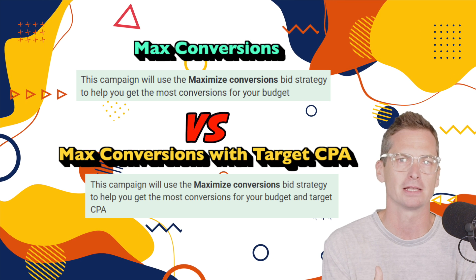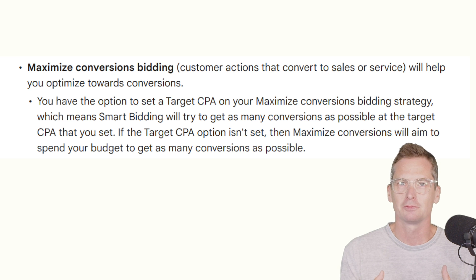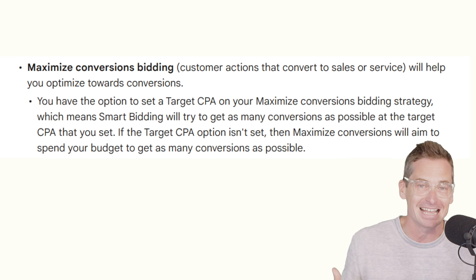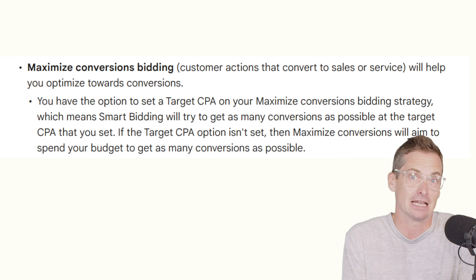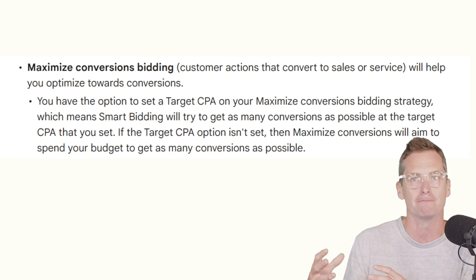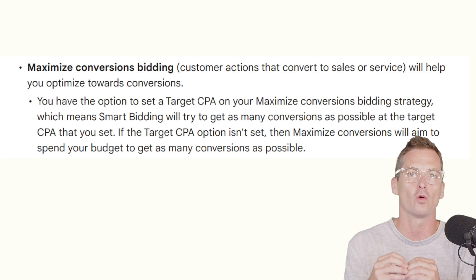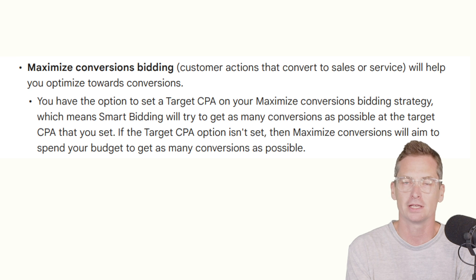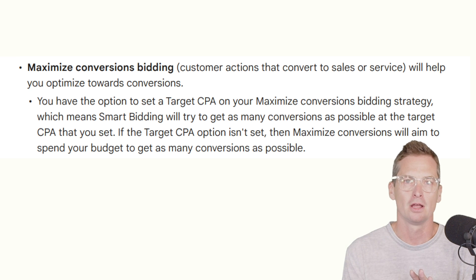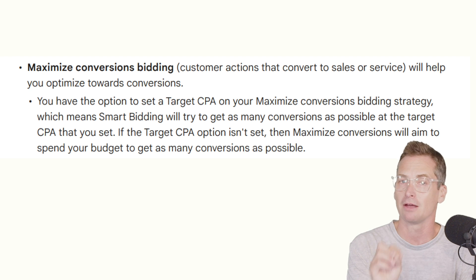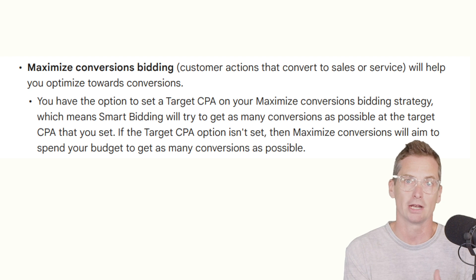We'll start with Maximize Conversions. This bidding type basically does exactly what its name says — it is going to go out and try to get you the most conversions for your budget. Something that will happen with this in all likelihood, is that you are probably going to spend your daily budget each and every day with this bid strategy type.